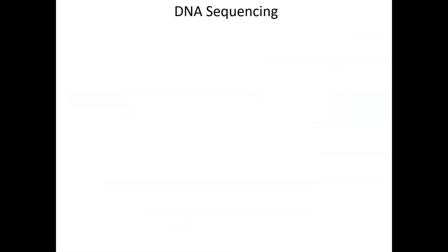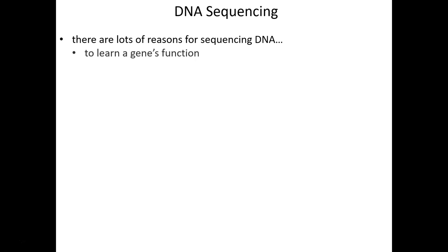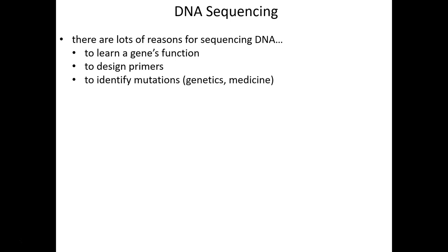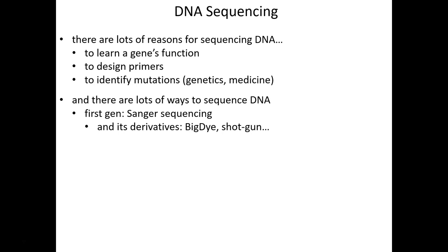That's PCR. Now we'll go on and talk about DNA sequencing in all three forms — first-gen, second-gen, and third-gen. There are lots of reasons to sequence DNA: to learn about its function, to deduce the amino acid sequence it encodes using the genetic code from a start codon to a stop codon, to have a sequence in hand so we can design primers for PCR, and medically to determine the presence of mutations. The earliest approach is Sanger sequencing, named after Fred Sanger — winner of two distinct Nobel Prizes — and then Sanger sequencing has been derived to more modern approaches like big-dye and shotgun sequencing that still use Sanger's chemistry.